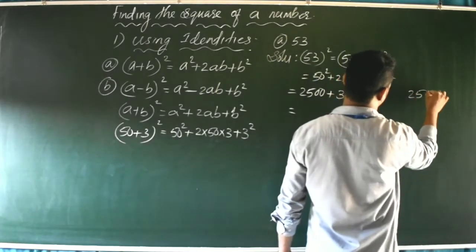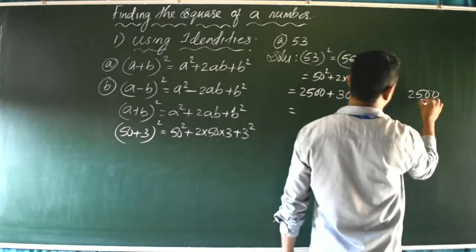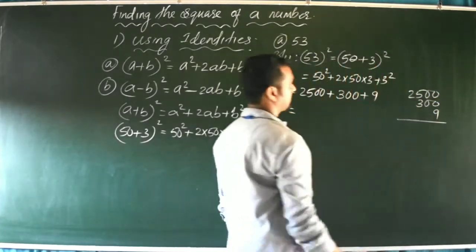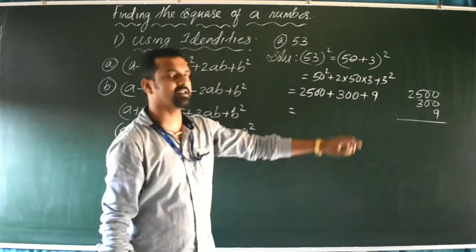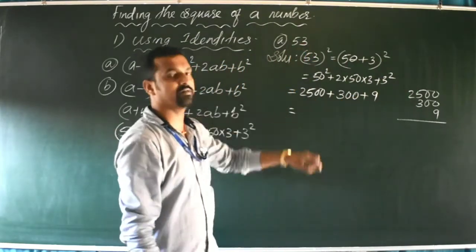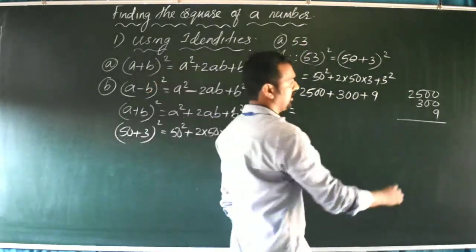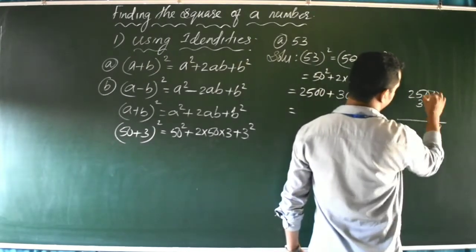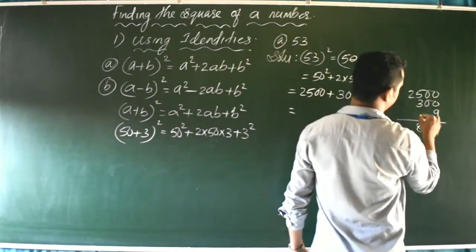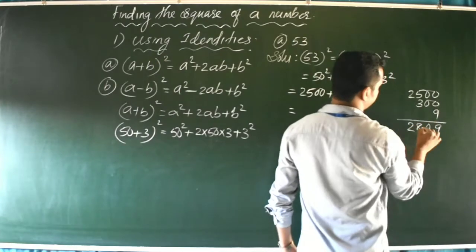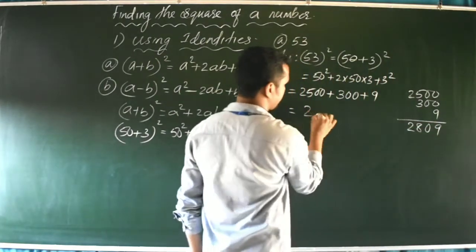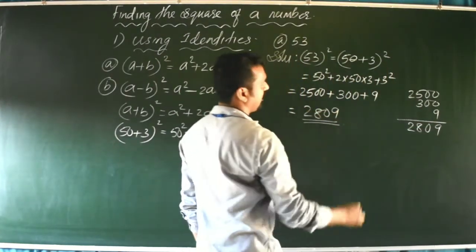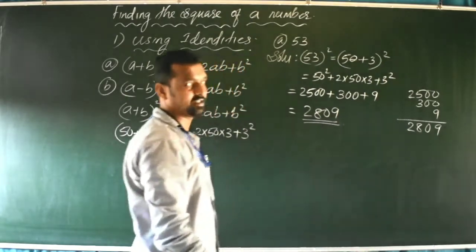So we get 2500 + 300 + 9. Adding these together: 9 + 0 = 9, 0 + 0 = 0, 5 + 3 = 8, and 2 remains. So the answer is 2,809.